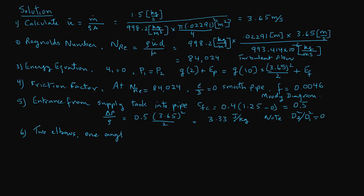The two elbows and the angle valve also contribute frictional energy. That is: ΔP/ρ = (2 × 1.5 + 2) × (3.65² / 2), where 1.5 is the loss coefficient for each elbow and 2 is the coefficient for the angle valve, both obtained from standard tables. This equals 33.31 joules per kilogram.